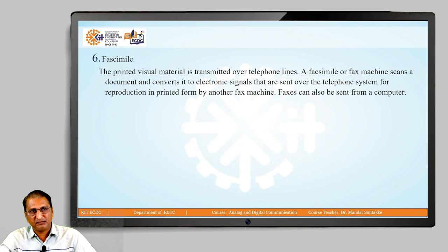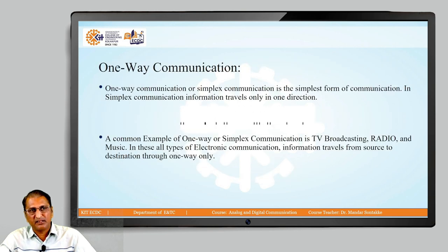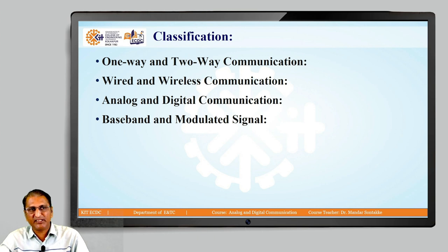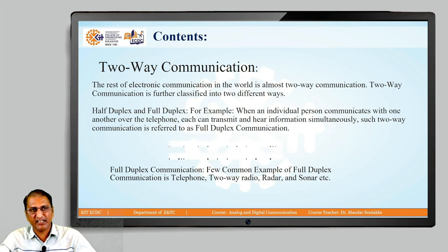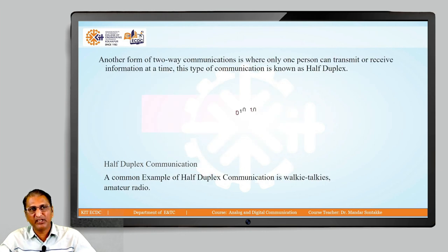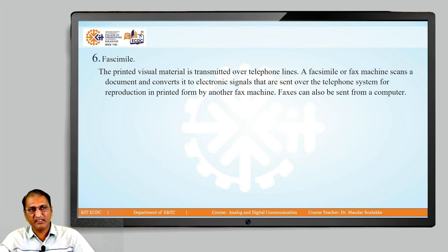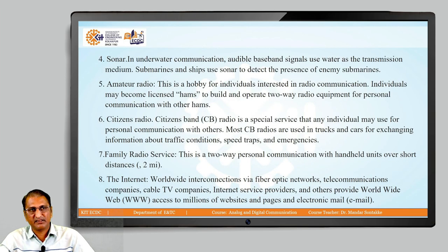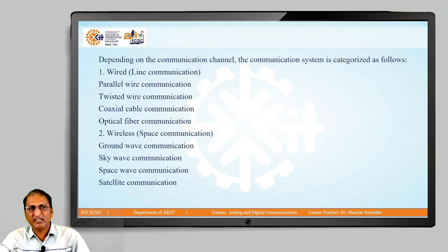In short, in this lecture we classified communication as one-way and two-way. One-way means unidirectional, two-way means in both directions. In two-way there are two types: half-duplex and full-duplex. In the next lecture, we are going to discuss other types of classification of communications.